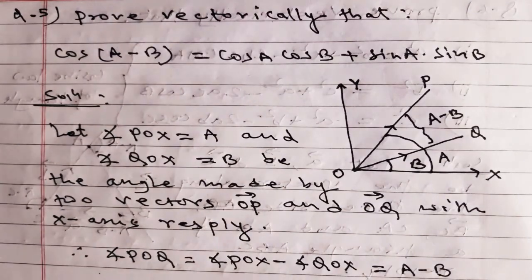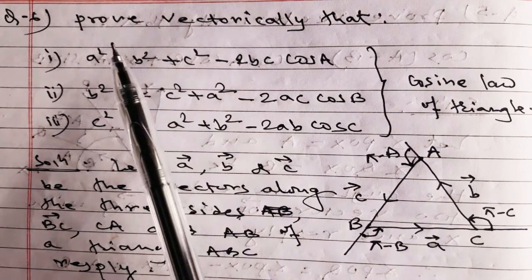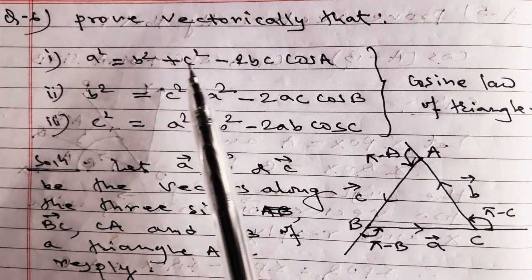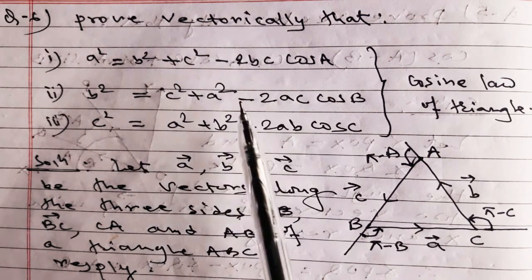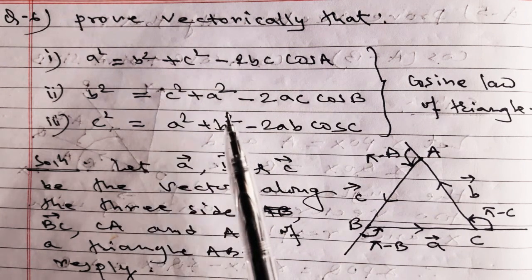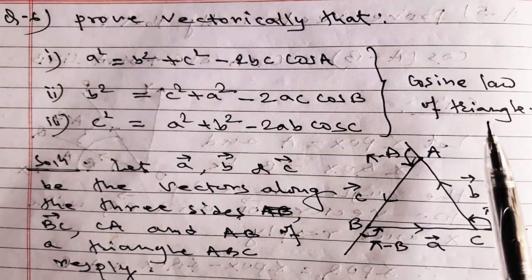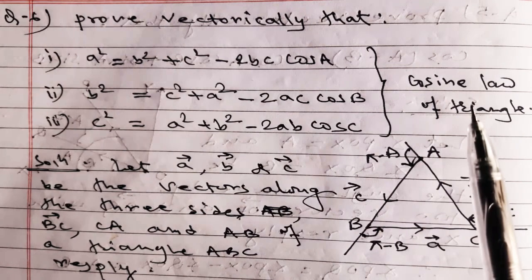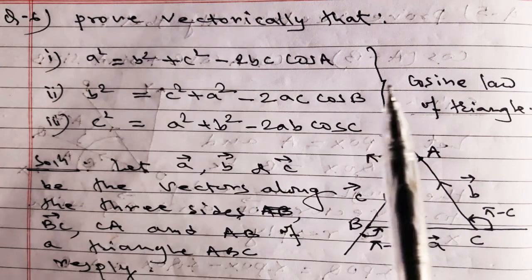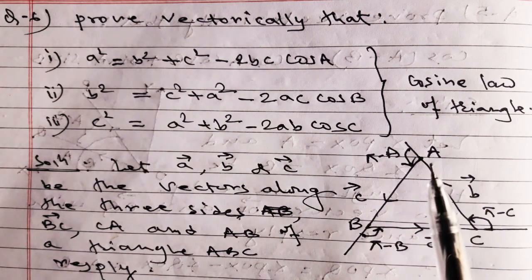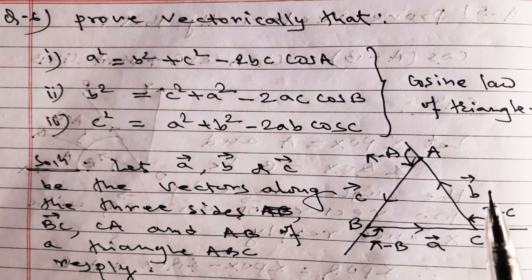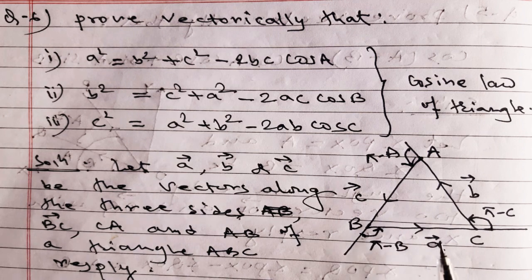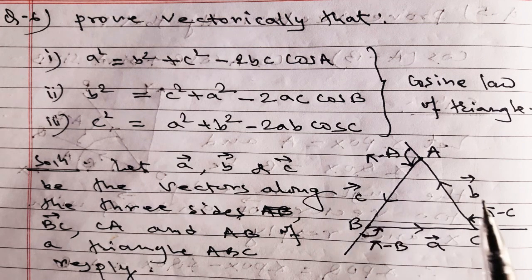Question number six: prove vectorically the cosine law of triangle: a² = b² + c² - 2bc·cosA; b² = c² + a² - 2ac·cosB; c² = a² + b² - 2ab·cosC. This is the cosine law of triangle — a property of triangles that we can prove using the scalar product of vectors.